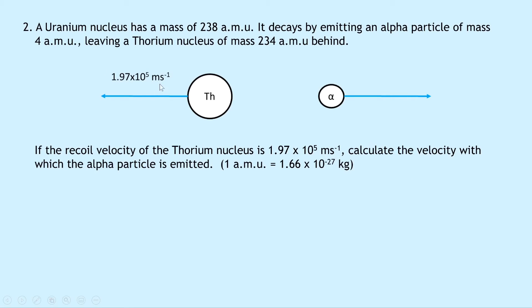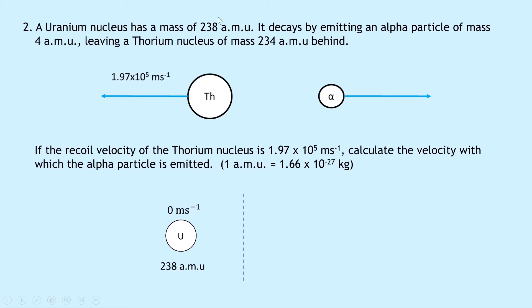The recoil velocity of the thorium nucleus is 1.97 × 10⁵ meters per second, moving to the left. We want to calculate the velocity with which the alpha particle is emitted, given that 1 amu = 1.66 × 10⁻²⁷ kg. Sketching before and after: before, the uranium nucleus at 238 amu is stationary at 0 m/s. After, the thorium nucleus at 234 amu moves left at 1.97 × 10⁵ m/s, and the alpha particle at 4 amu moves right at unknown velocity v2.